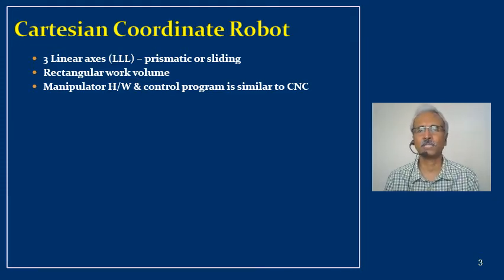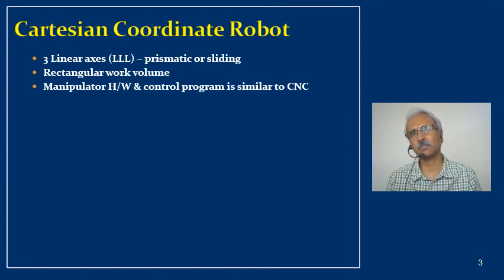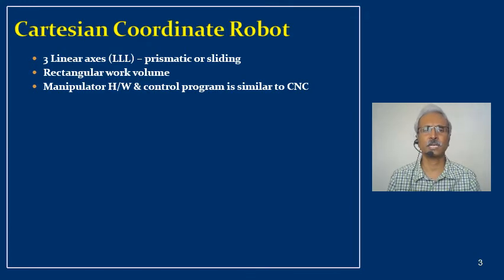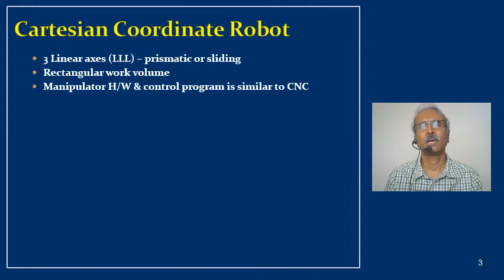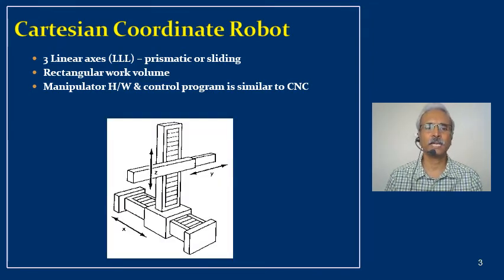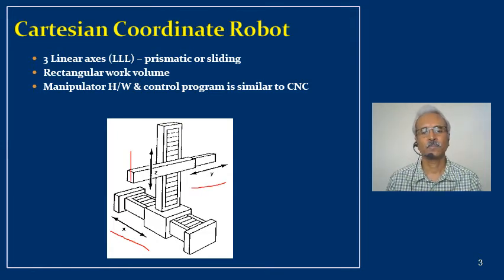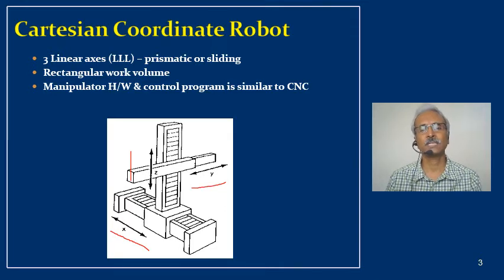The control system of the Cartesian coordinate robot is similar to that of a CNC machine, with only X, Y, and Z axes, making the control system relatively simple. Looking at the diagram, you can see three mutually perpendicular axes — X, Y, and Z — and the construction is very straightforward, with all three axes being sliding joints.